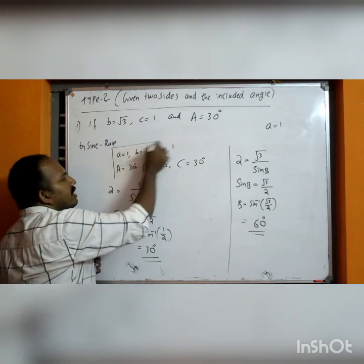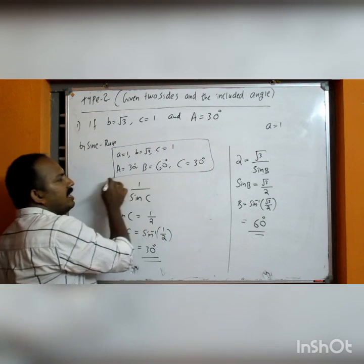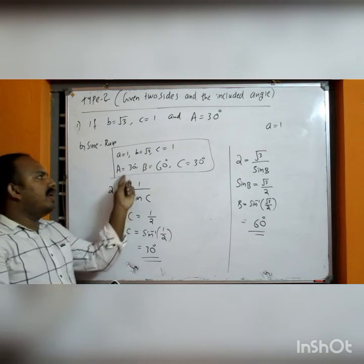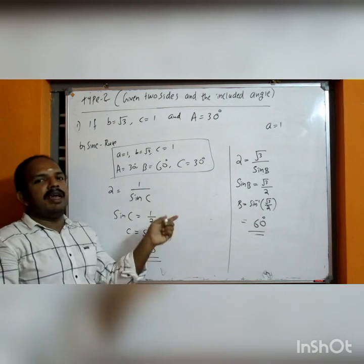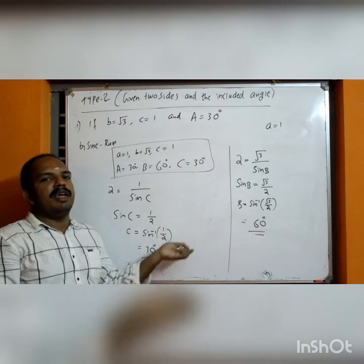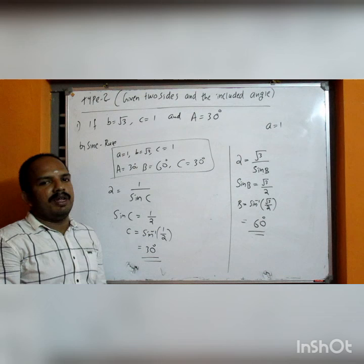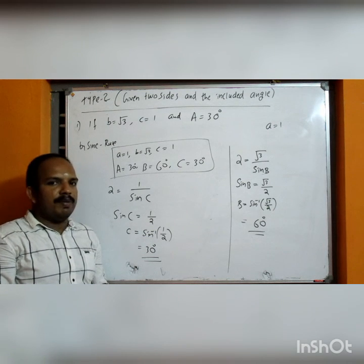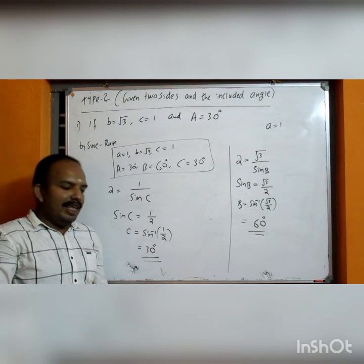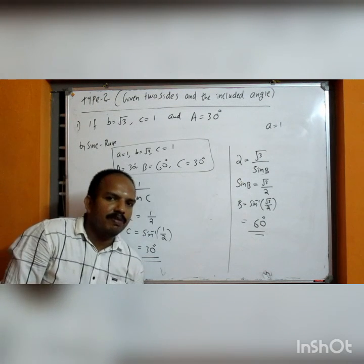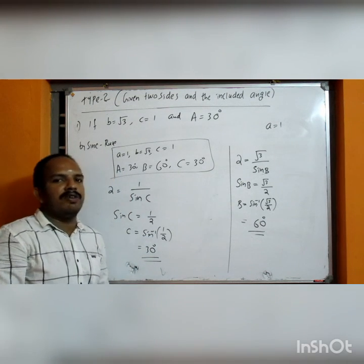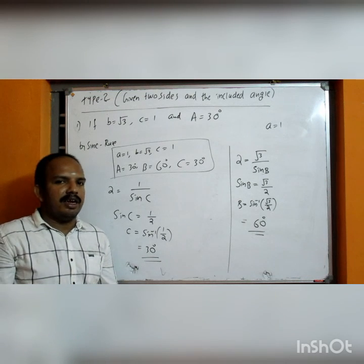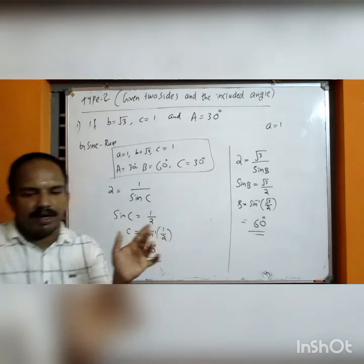Once you know this table, you don't need to compute the sine inverse separately. If you want to find two angles, you can use the relation 180 minus the known angle. This covers the type 3.5 — you can now answer any questions of this type. Thank you. Bye-bye.